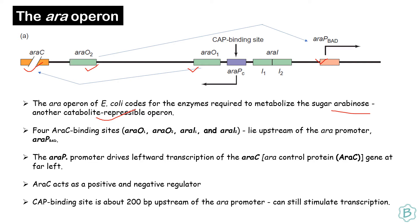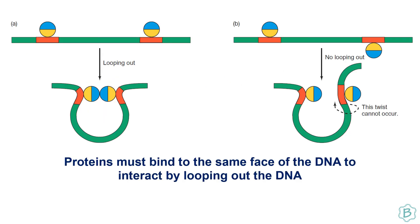AraC acts as both a positive and negative regulator. An araPC promoter drives the leftward transcription of the araC gene. At the CAP binding site, cyclic AMP-CAP complex binds when glucose levels are low, which in turn stimulates transcription.